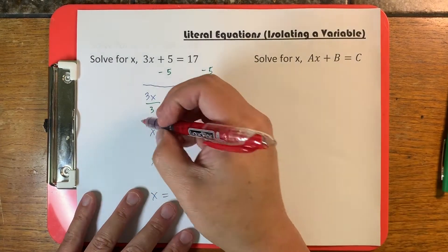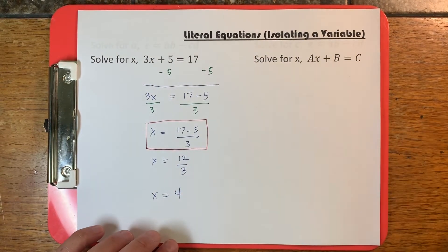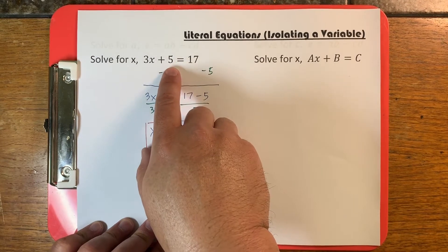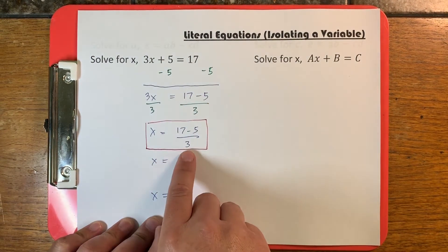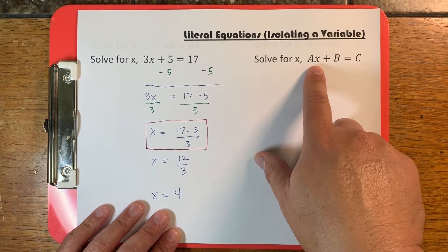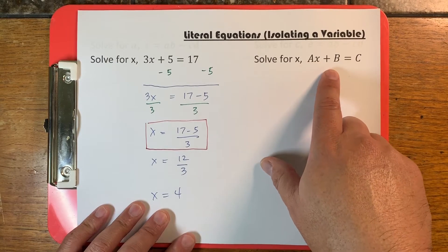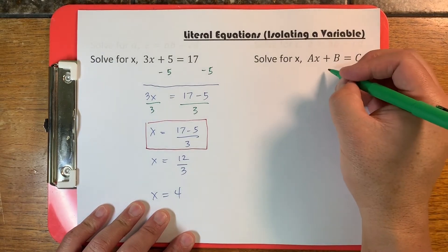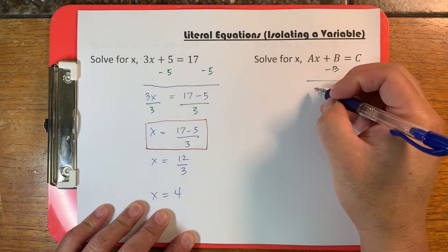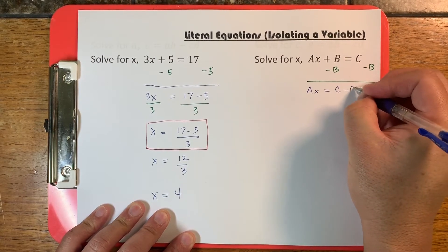What we want to focus on is this literal equation. In order to isolate the x, what we did was subtract the 5 and divide by 3. We're going to do the same thing here. I want to isolate x, so the first thing I want to do is subtract the b from both sides. And I'll get ax is equal to c minus b.